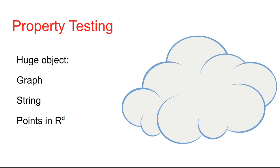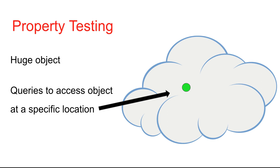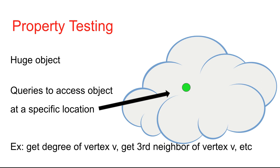So what exactly is Property Testing? In Property Testing, we assume we have a huge object — it could be a graph, a string, or points in R^d. Then we assume that we have queries to access this huge object at a specific location. In the case of a graph, our queries could be: get the degree of some vertex v, or get the third neighbor of v, and so on.